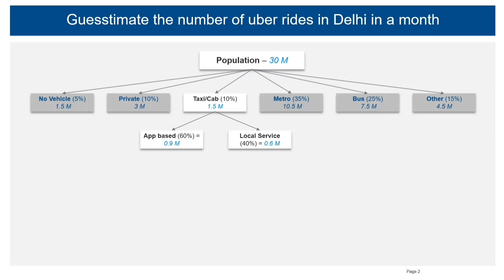The split I've taken is 60% for app-based and 40% for local services. Again, since our focus should be on Uber rides, which is an app-based service, I'm going to ignore local service and concentrate only on the app-based service.